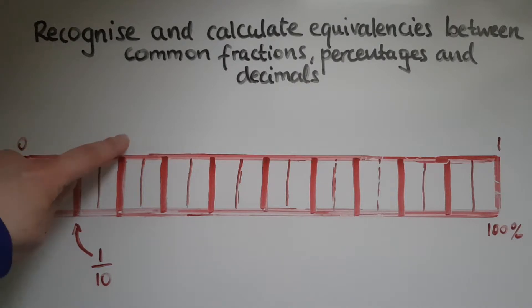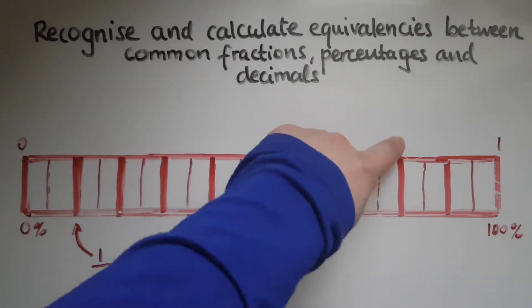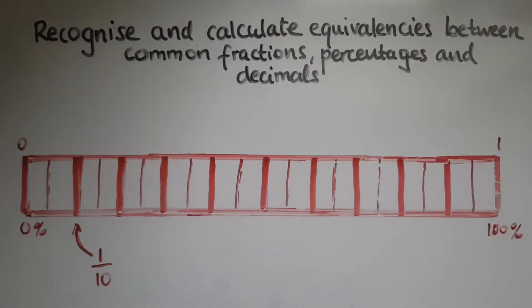So I'd go 0, 0.1, 0.2, 0.3, 0.4, 0.5, 0.6, 0.7, 0.8, 0.9, and then 1. So this is the same as 0.1.